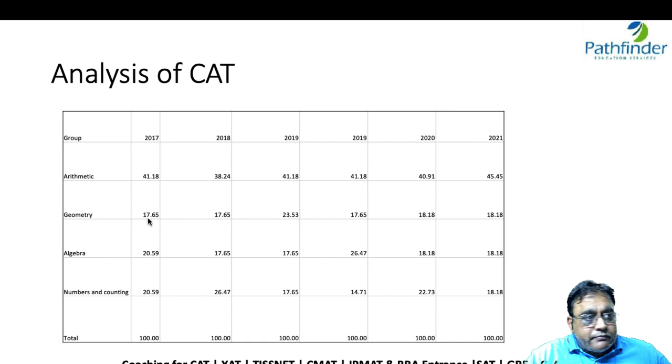Similarly you have geometry ranging from 17 to 23 percent. You can assume that geometry will be within these limits only. The same thing applies for algebra from 17 to 20 percent, numbers and counting from 17 percent to 26 percent.